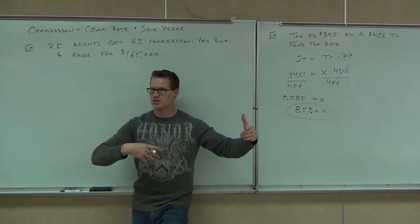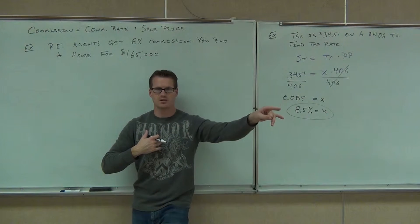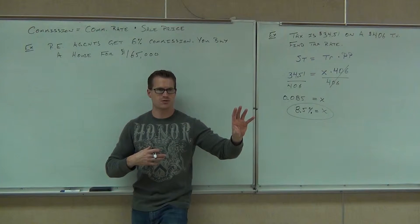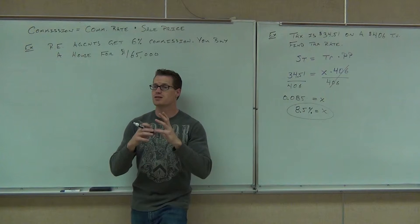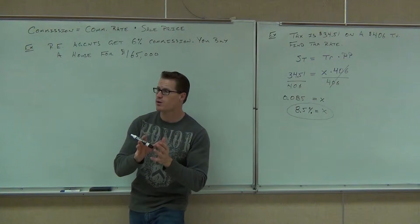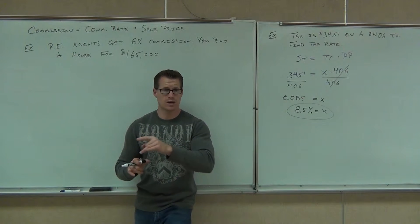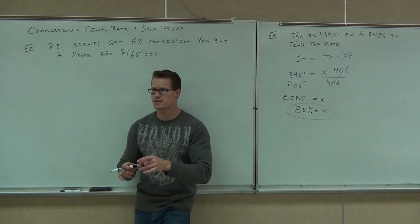If us two are real estate agents and I've listed a house and he sells my house, I have to split that. He gets 3%, I get 3%. Do you understand the idea of commission? So if you sell your own listing, you get the full 6%. So let's say we go and we buy this house from somebody, we buy it from a real estate agent and that guy goes, okay, you just bought this house for $165,000.